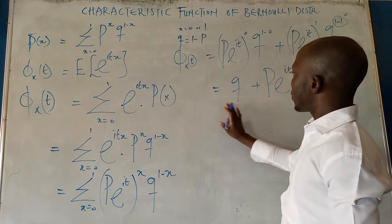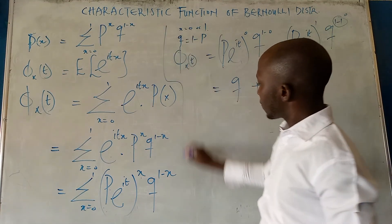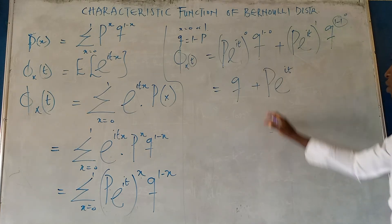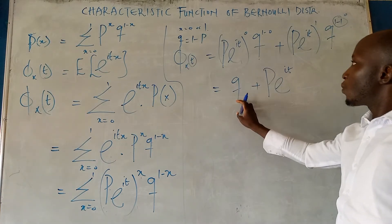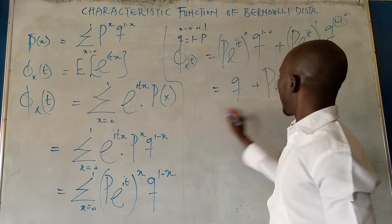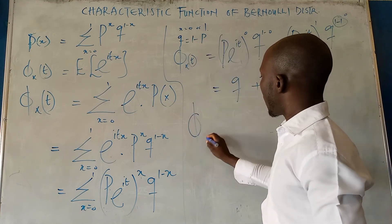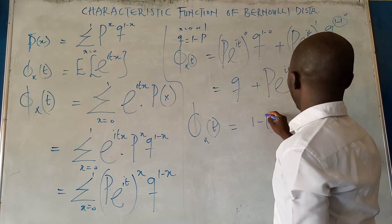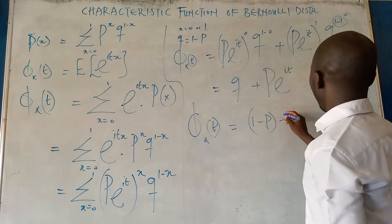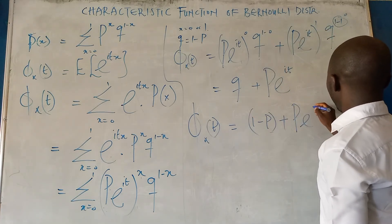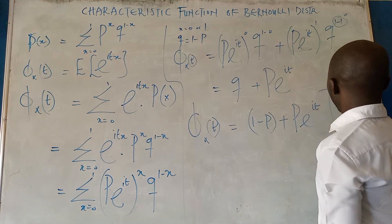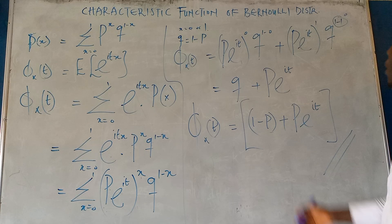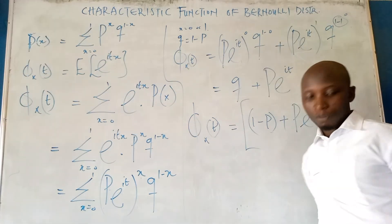This gives us the characteristic function of the Bernoulli distribution. Since Q equals 1 minus P, we can also write it as φ_X(t) equals 1 minus P plus P·e^(it). This is the characteristic function of the Bernoulli distribution.